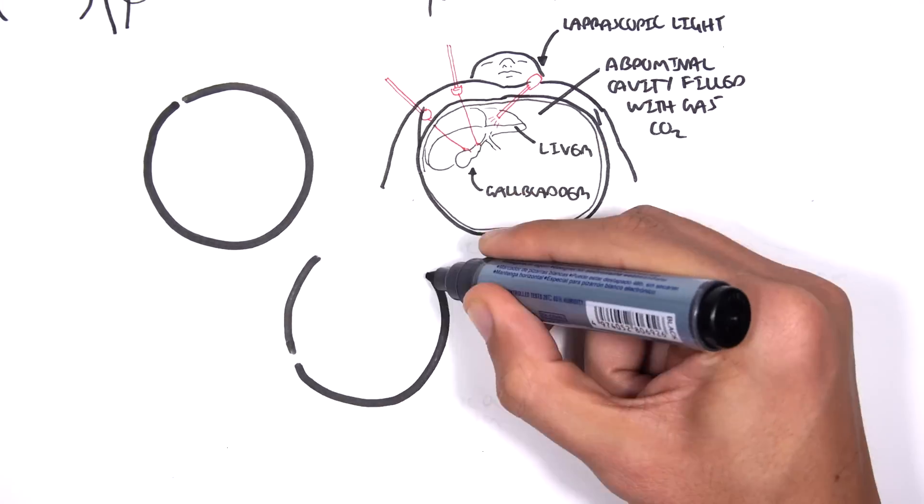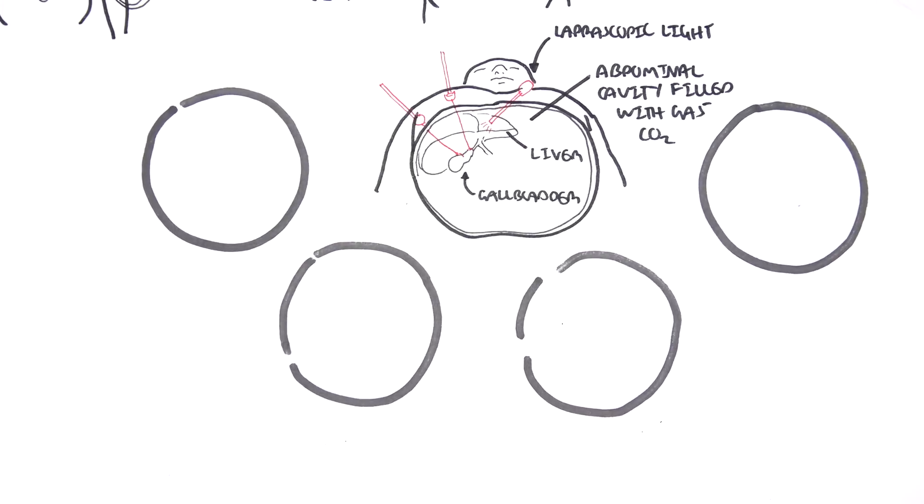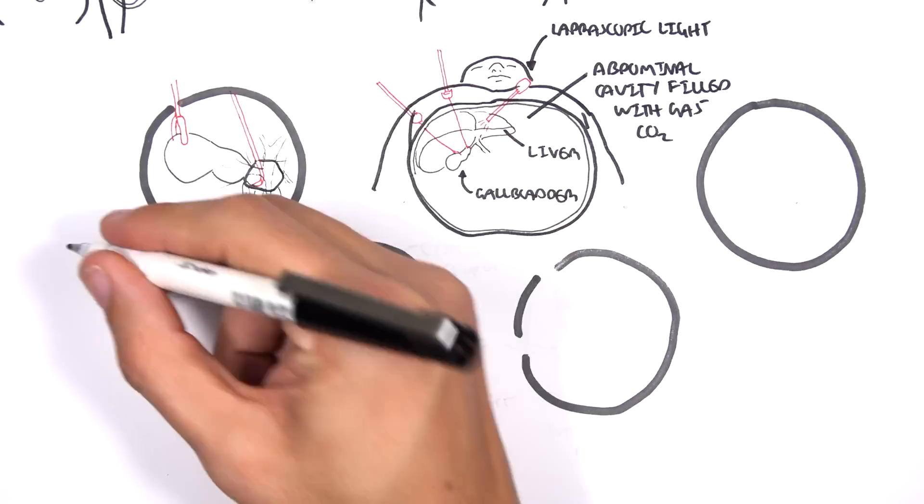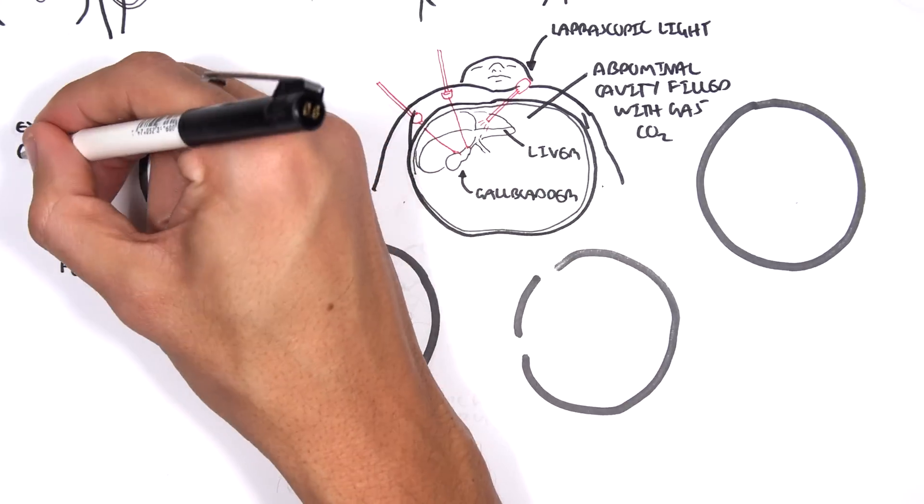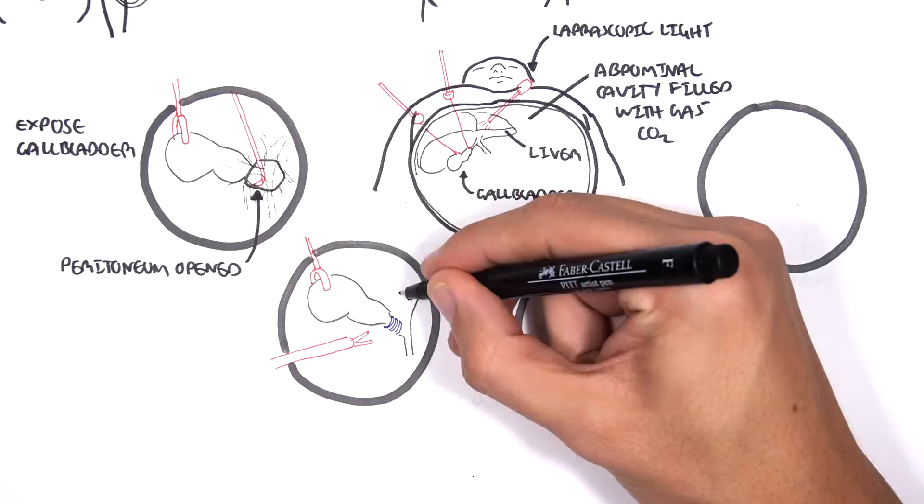So I am not a surgeon, but this hopefully will give you an understanding of cholecystectomy in general. Firstly, what happens is that they want to expose the gallbladder. Because the gallbladder and the digestive organs are surrounded by the visceral peritoneum. When the gallbladder is exposed, the cystic artery is clipped and the cystic duct is clipped.